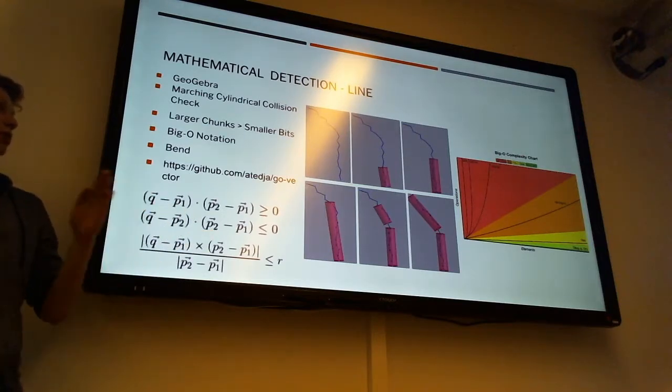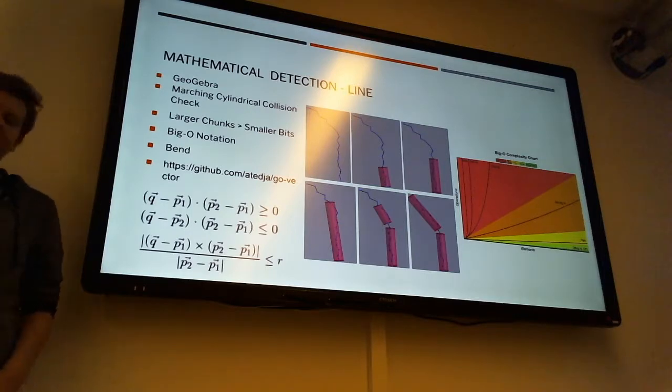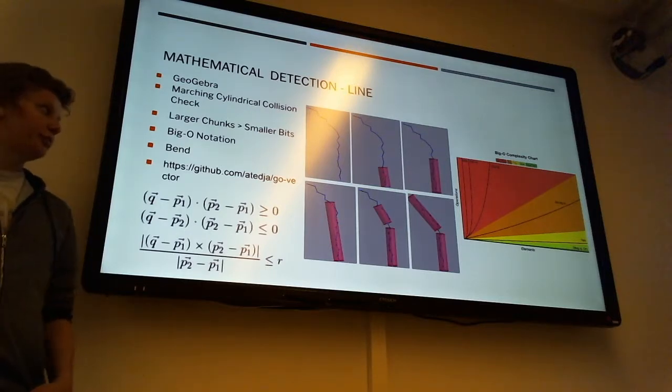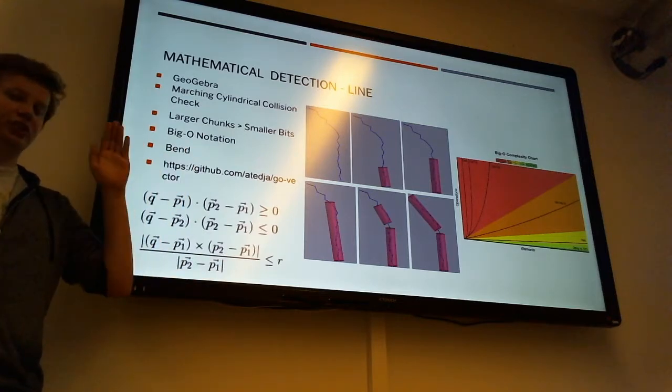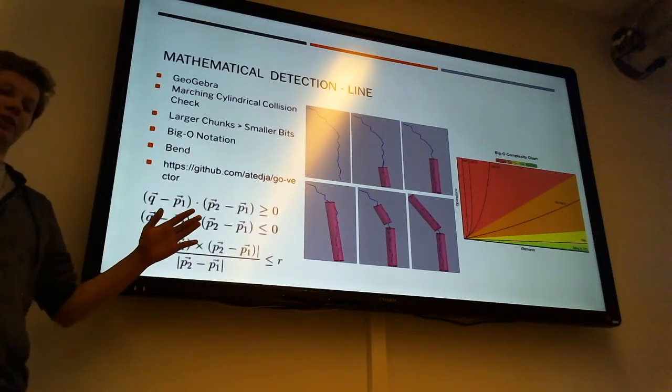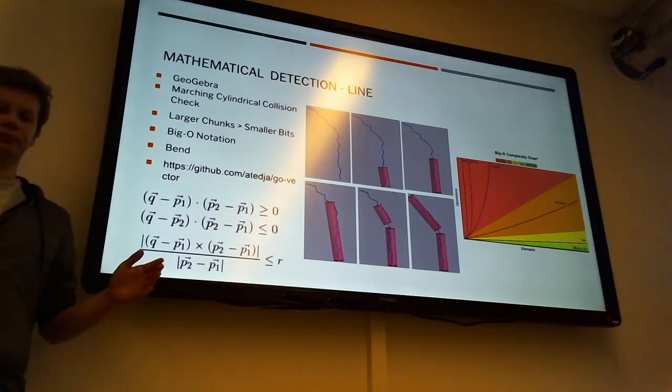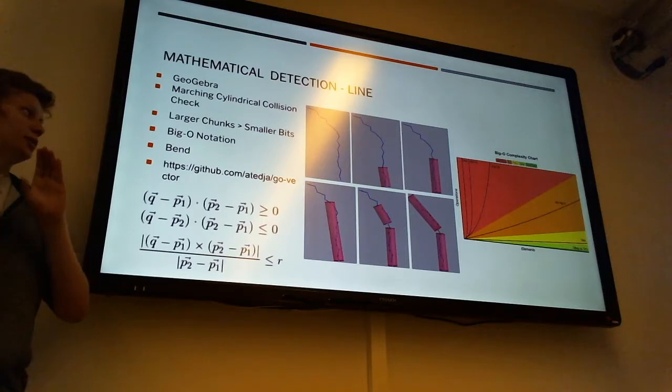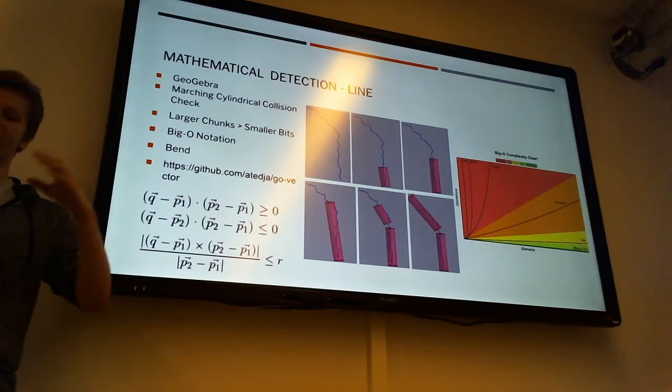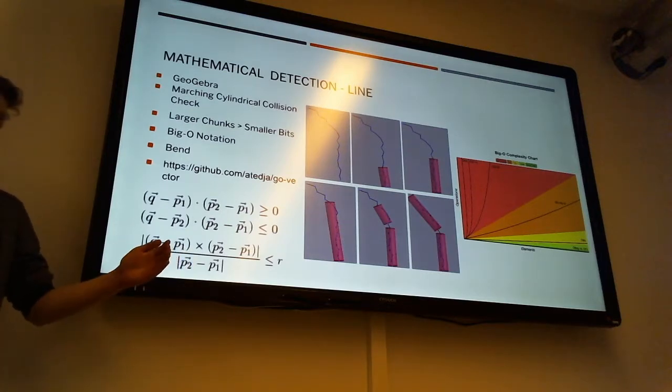So, what you see here is a marching cylindrical collision check. The marching part of it means that it doesn't just check the entire thing at once and then declare either it's straight or either it's not straight. Instead, it'll take a chunk and see if that is straight, and then see if the next chunk is also straight.